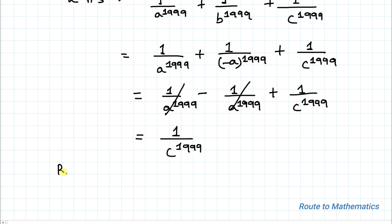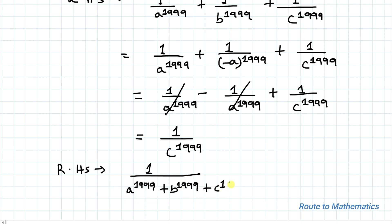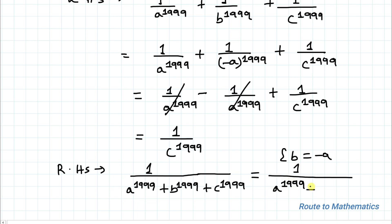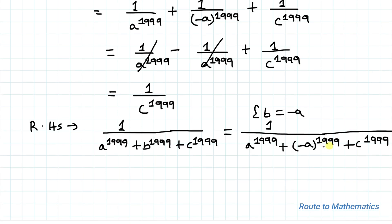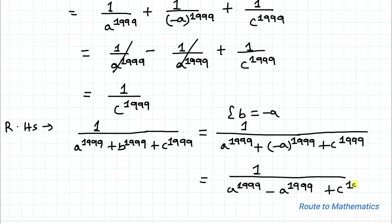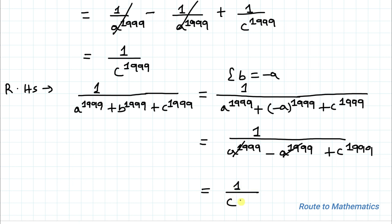Now let's check the right-hand side. We have 1/(a^1999 + b^1999 + c^1999). Substituting b = -a, since 1999 is an odd number the minus sign remains, so b^1999 = -a^1999. We get 1/(a^1999 - a^1999 + c^1999). These terms cancel, giving 1/c^1999.